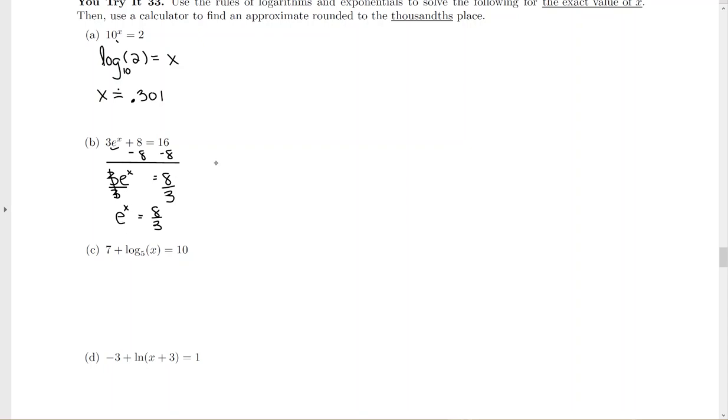I do need to get the x by itself. It's an exponent, so I need a logarithm. The base is e in this case. Argument 8 thirds equals the power. Again, the power is always what the logarithm is equal to on the other side. Now, a few things. Log base e, remember, that by definition is really the natural logarithm of 8 thirds equals x.